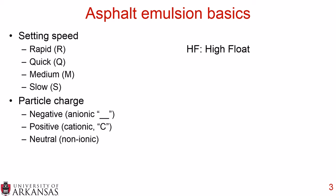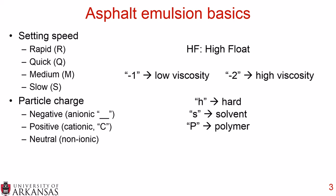You may see a capital HF, which stands for a high float emulsion. A dash-1 indicates a low viscosity asphalt emulsion, whereas a dash-2 is a high viscosity. A small h is a hard asphalt emulsion residue, and a small s indicates the asphalt emulsion contains a solvent.